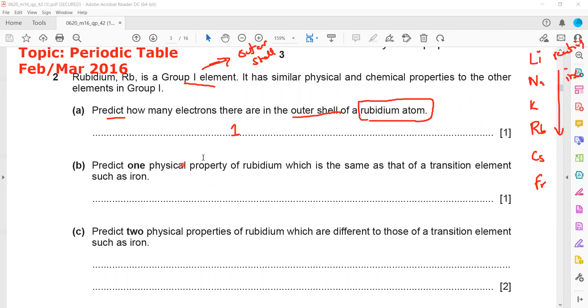Then predict one physical property of rubidium which is the same as that of a transition element such as iron. Physical properties refer to density, melting point, boiling point. So these are the physical properties.